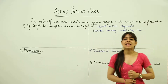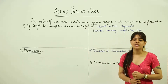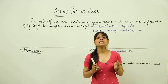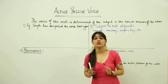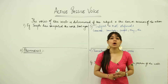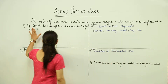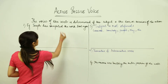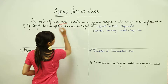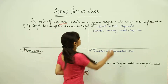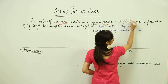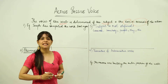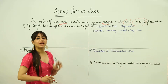The topic for the day is active and passive voice. In active and passive voice, we generally deal with the doing or the action word, that is the verb. Let's go through the definition. The voice of the verb is determined by whether the subject is the doer or the receiver of the action. Now let's see this with the help of an example.